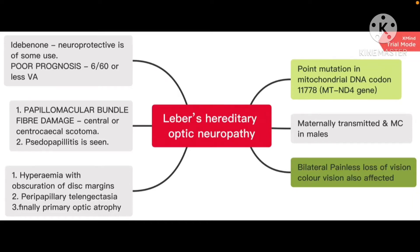Leber's Hereditary Optic Neuropathy, or LHON, is caused by a point mutation in mitochondrial DNA, most commonly at codon 11778, involving the gene MTND4. It is maternally transmitted and most commonly occurs in males.